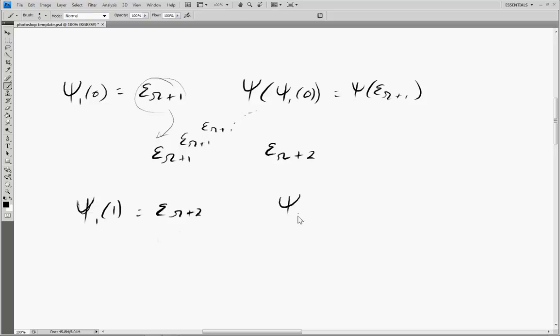And we can even say in general that psi 1 of a is equal to epsilon sub omega plus 1 plus a.